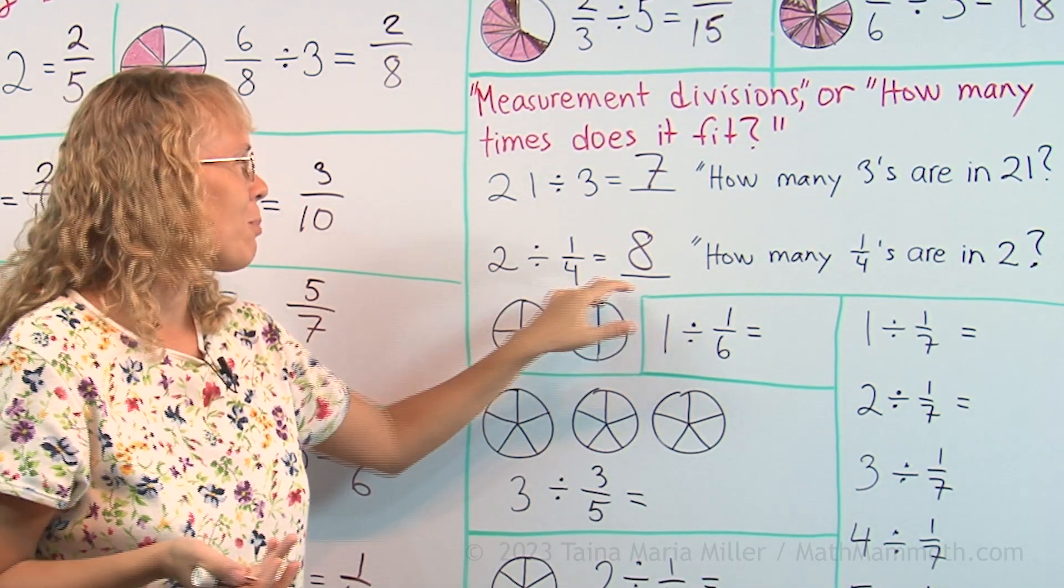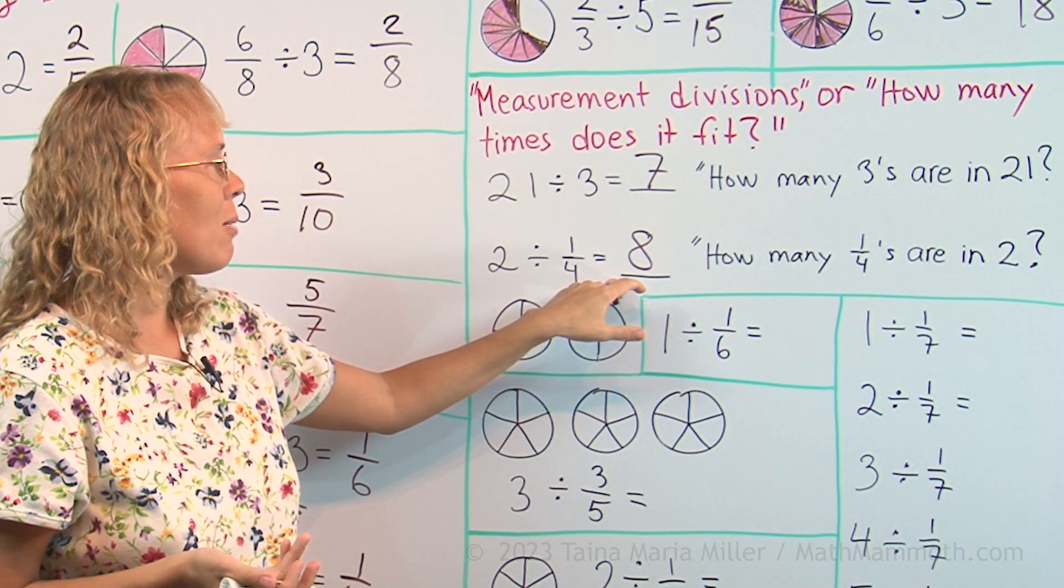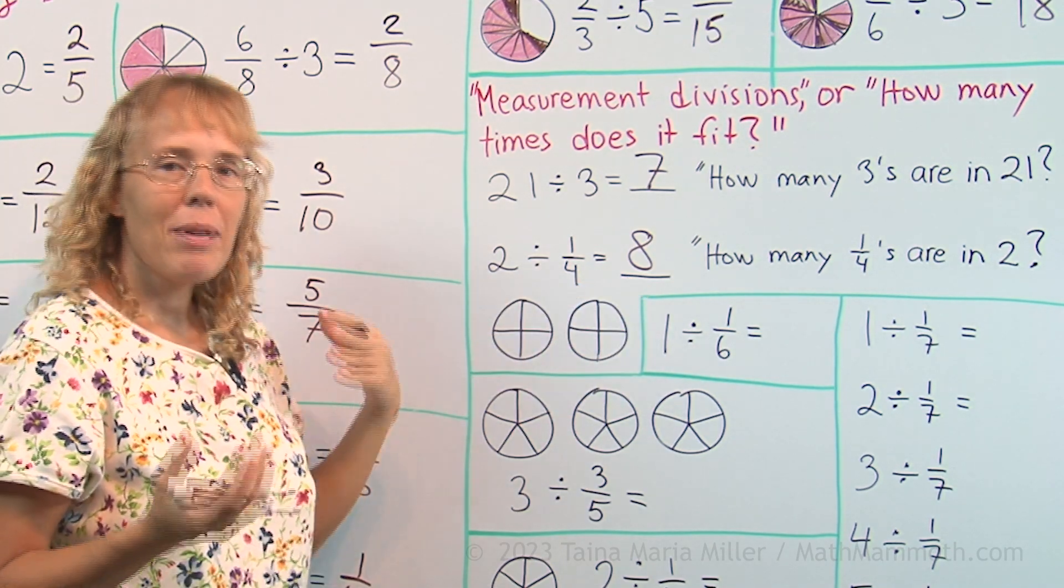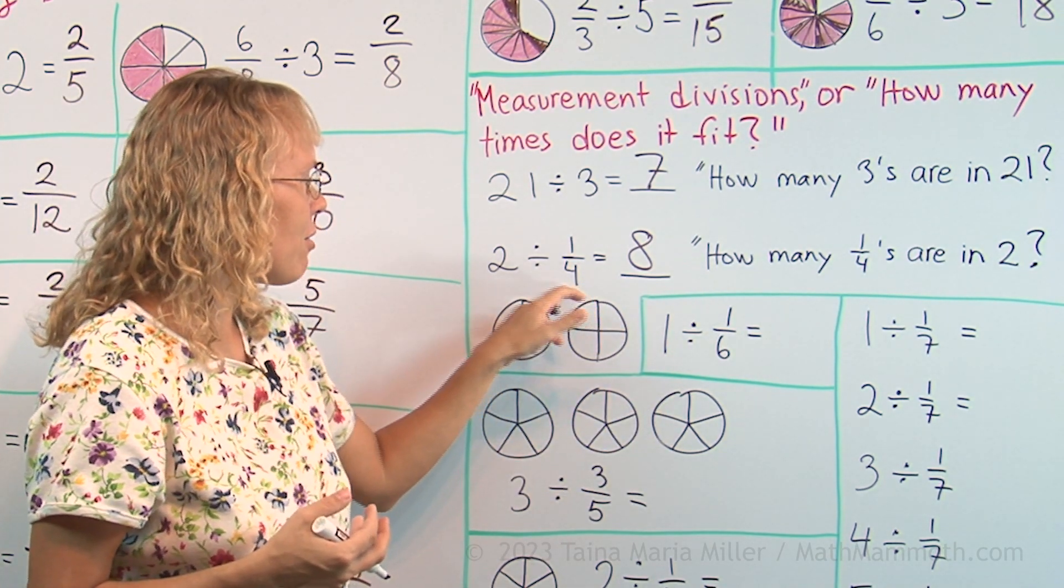It looks a little odd, maybe, at first, because you're dividing something, you get a bigger number, but it makes sense when you think this way. How many of these fit in here?